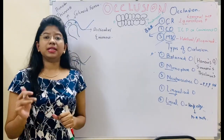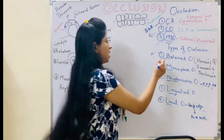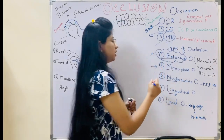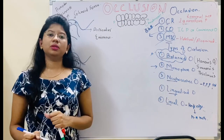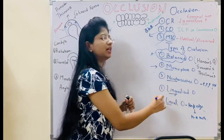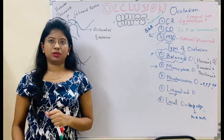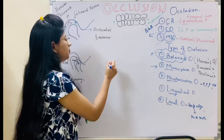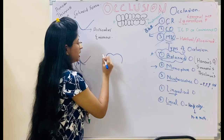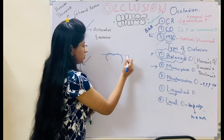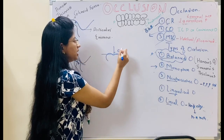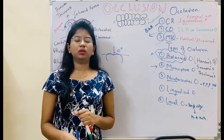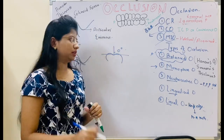We are going to see in detail about balanced occlusion. Before that, let me enumerate the other types. Monoplane occlusion uses 0-degree teeth — the angulation of the teeth is 0 degrees, and in monoplane teeth, both arches use 0-degree teeth.